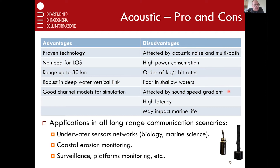Another big issue and big difference of acoustic communication with respect to radio is the large latency. Because the speed of sound is actually not very much — 1500 meters per second — compared to 3×10⁸ meters per second of radio or light propagation. So this makes latency quite high, which has an impact on interference considerations and protocol design considerations.